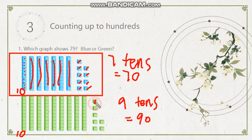And let's count on. 91, 92, 93, 94, 95, 96, 97. So the green graph gives you 97, which is not what we want. We want 79. So the blue one is the correct answer.